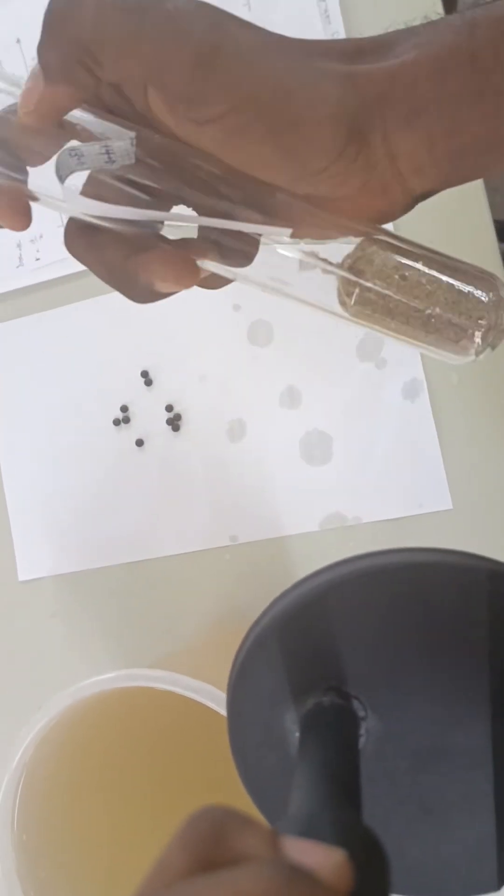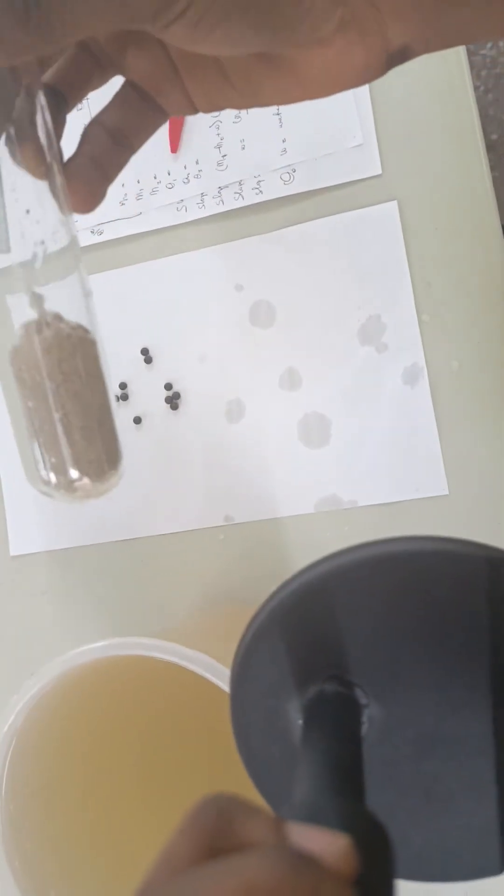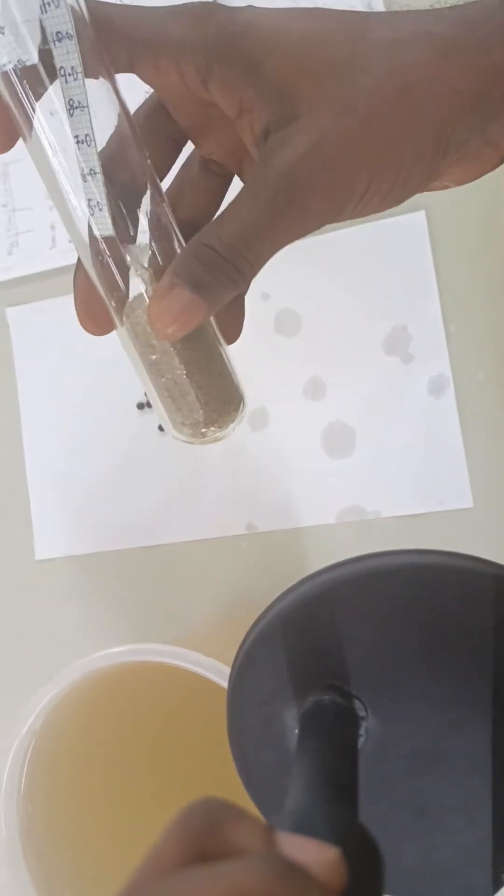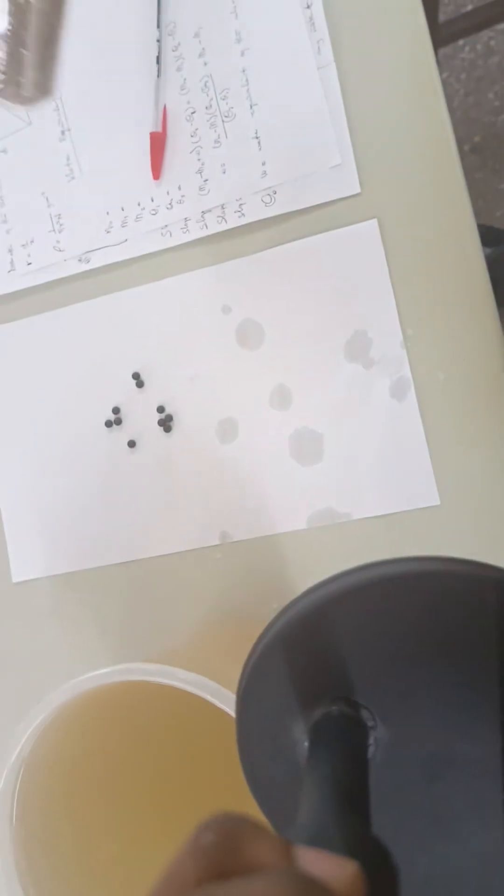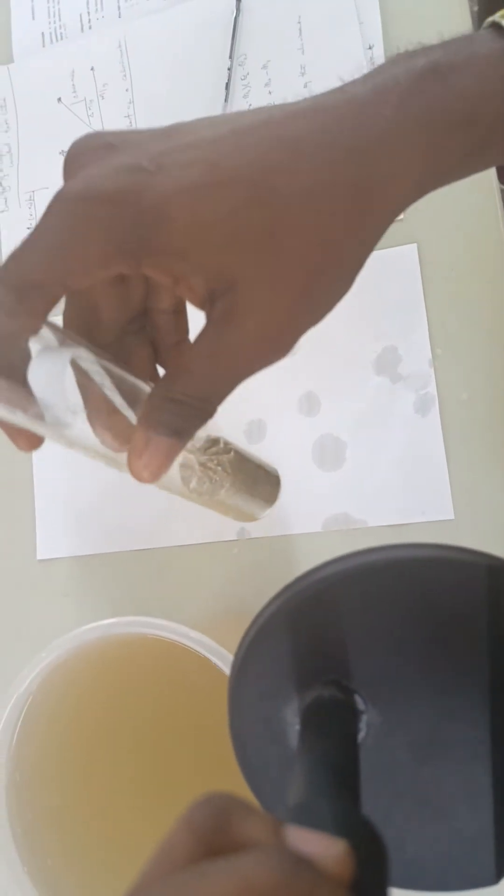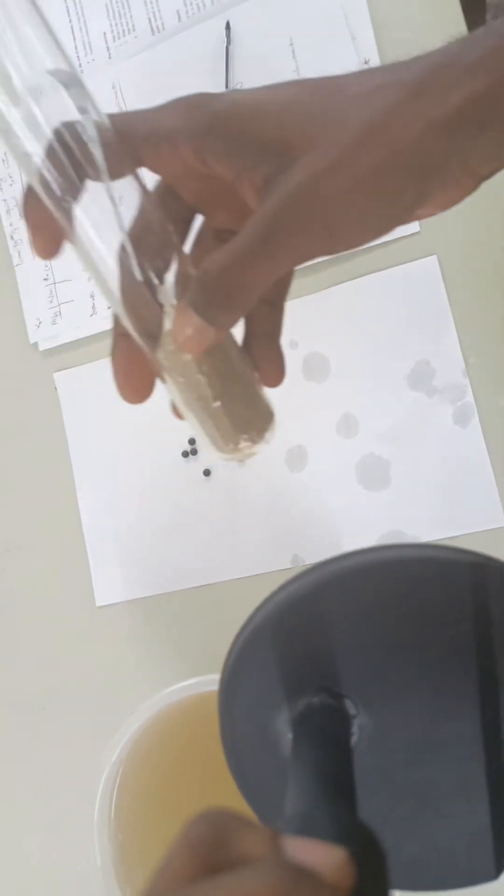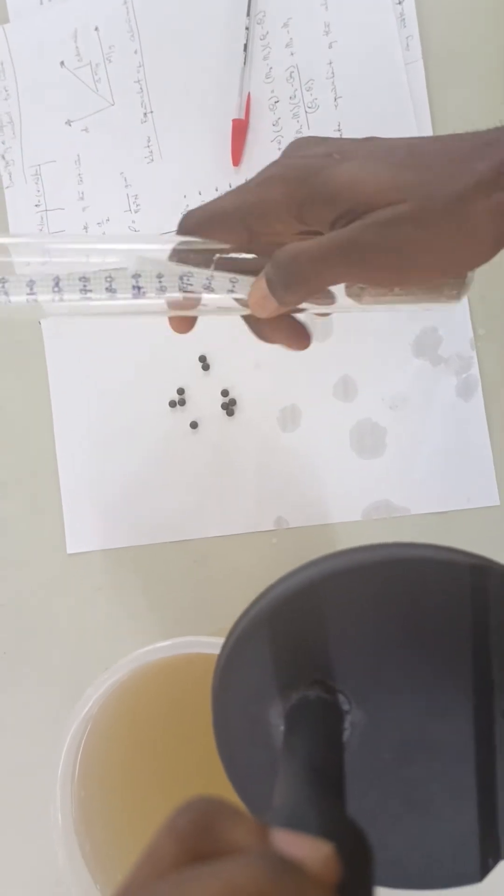So we used sand, sand of equal mass. We tied sand, so the equivalence of the lead is what we have put here. They have the calibration on it, on the test tube.